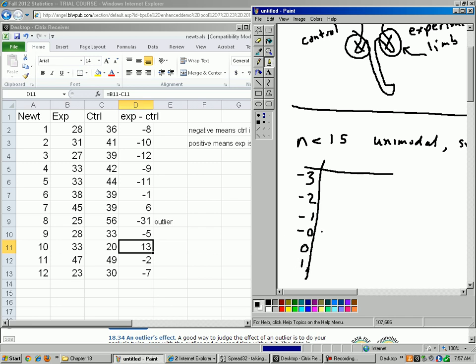And then I've got negative 8, which would mean negative 08, negative 10, which is negative 10, negative 12, negative 9, negative 11, negative 1, that'd be negative 01, positive 6, negative 31, negative 5, positive 13, negative 2, that'd be negative 02, and negative 7. There's our stem plot.